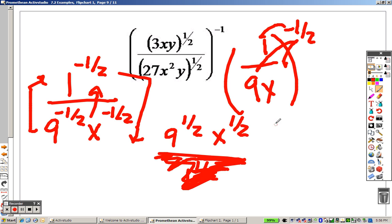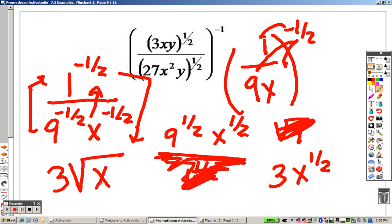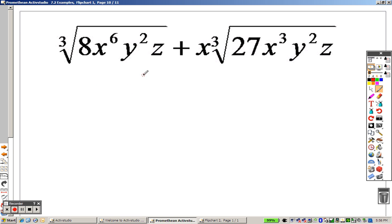9 to the 1-half is like saying the square root of 9, and the square root of 9 is 3. So really, I'm looking at 3 times x to the 1-half, and that's it. Which, my official final answer, I would write as 3 root x would be my final answer, writing it as roots and rationals.